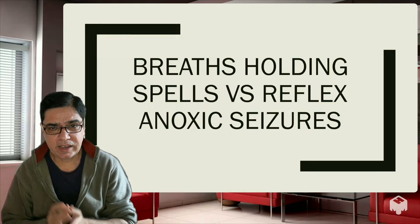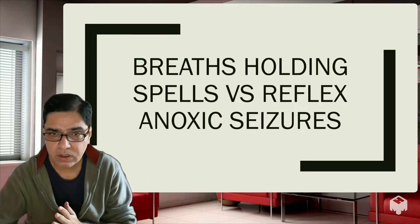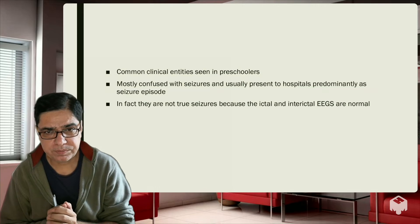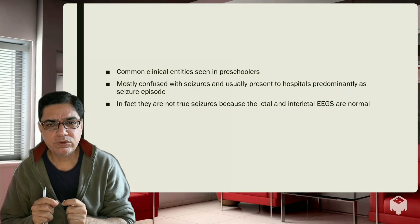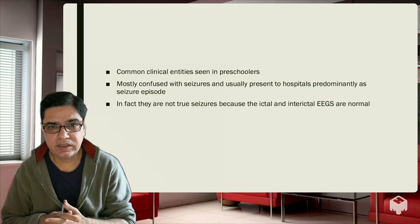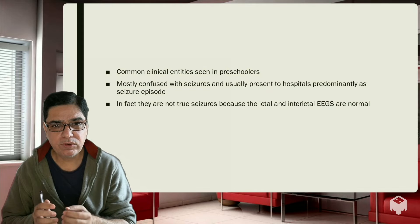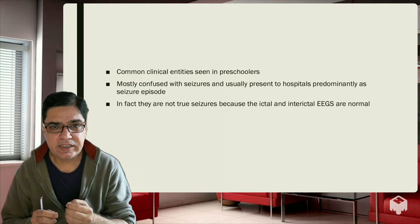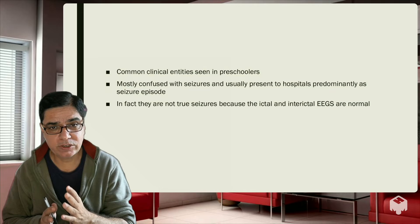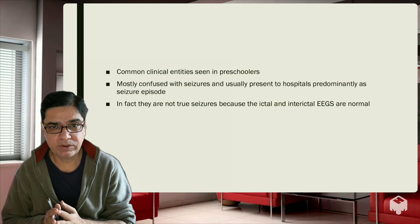Let's dive in and discuss how we differentiate between these two entities. These are common clinical entities, more common in the age group of one to five years. They are mostly confused with seizures, and parents come to the hospital frightened, thinking their child has had a proper seizure episode. But they are not proper seizures because the actual pathology is not in the brain. If you do ictal and post-ictal EEGs, you would see no abnormal brain waves. That is why we call them benign conditions caused by problems outside of the brain.